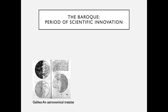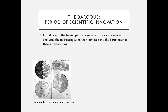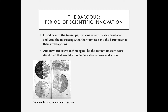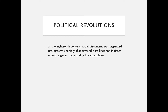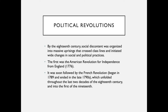Baroque scientists also developed and used the microscope, the thermometer, and the barometer in their investigations. New projective technologies like the camera obscura were developed that would soon democratize image production. By the 18th century, social discontent was organized into massive uprisings that crossed class lines and initiated wide changes in social and political practices. The first was the American Revolution for independence from England in 1776, soon followed by the French Revolution, which began in 1789 and unfolded throughout the last two decades of the 18th century and into the first of the 19th.